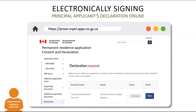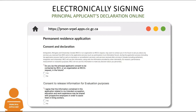Once they've signed into their own user account for the PR Portal and provided the required information for those online forms, they will need to navigate to the Declaration section by clicking on this menu item and then click on the blue Start button. When the Declaration page opens, in the first part of the form, they will indicate their preferred response to these questions.